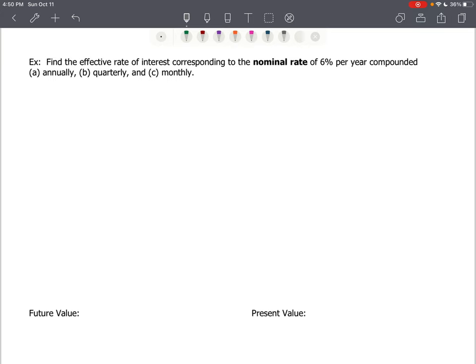Okay, the effective rate of interest corresponds to the nominal rate of 6% per year compounded annually, quarterly, and monthly. That's what we want to find, the effective rate of interest corresponding to the nominal rate of 6% per year. The nominal rate is the stated rate. It does not reflect interest earned.